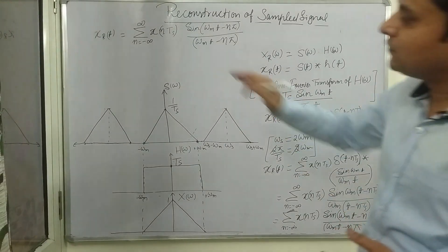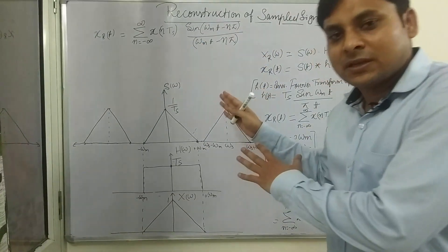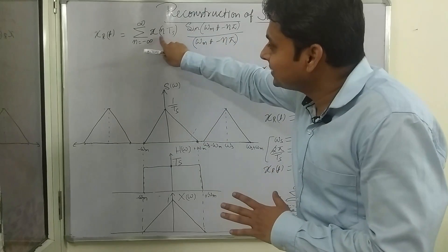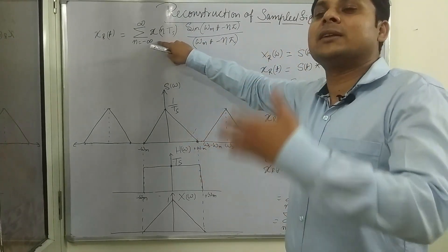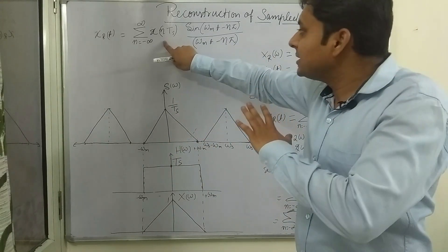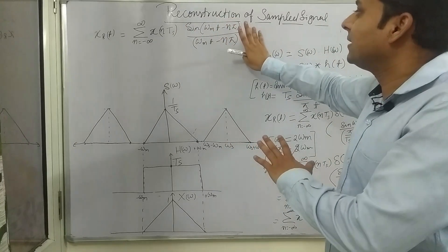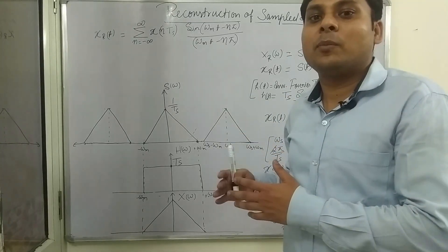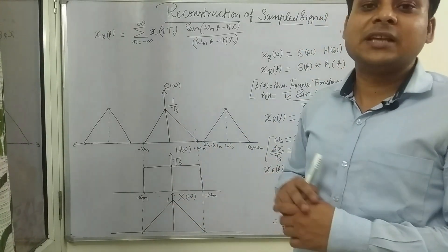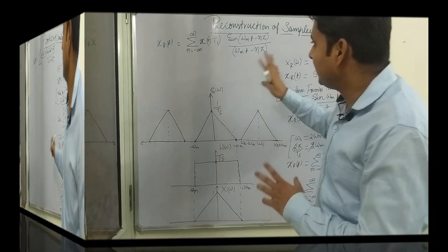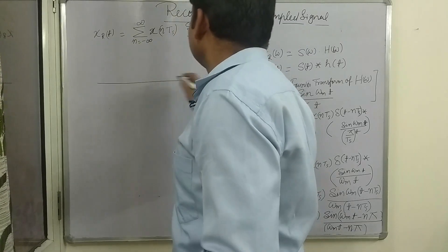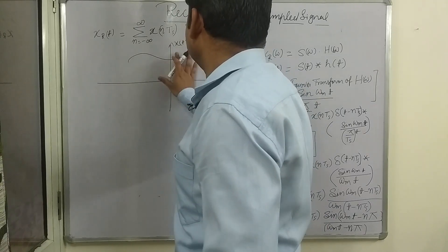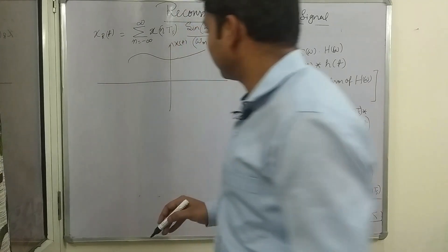You can see that the sample values x(nTS) — for n = 0, 1, 2, ... — are interpolated by this sinc function. This is what is called ideal sinc interpolation: the technique for reconstructing a sampled signal. To explain what this means visually: suppose X(t) is the original signal with sample values taken at regular intervals.